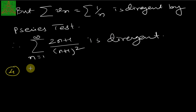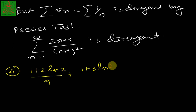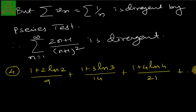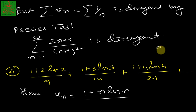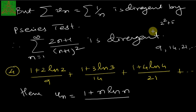The fourth example: test the convergence of the series 1 + 2·ln2/9 + 1 + 3·ln3/14 + 1 + 4·ln4/21 + ... The general term u_n = (1 + n·ln n)/(n² + 5) for n starting from 2. In the denominator, 9 = 2² + 5, 14 = 3² + 5, 21 = 4² + 5, confirming the denominator is n² + 5.